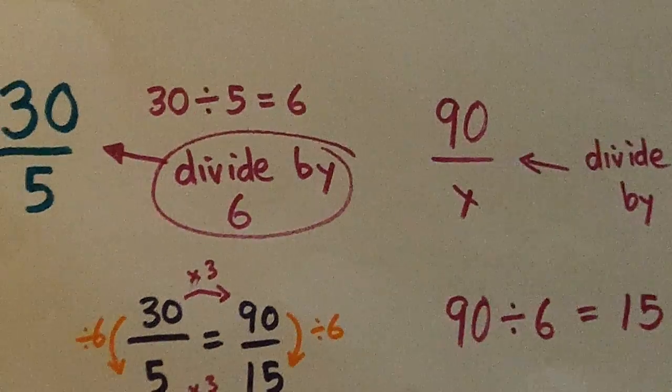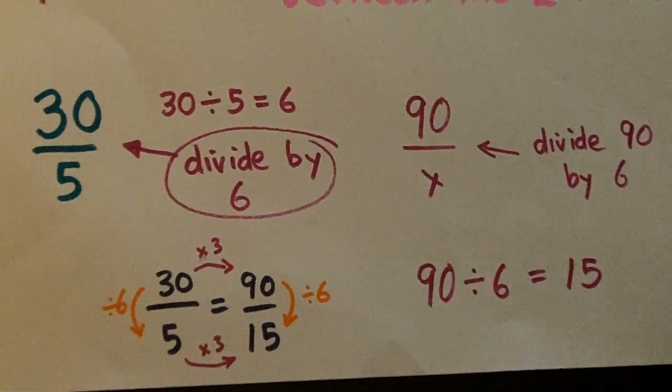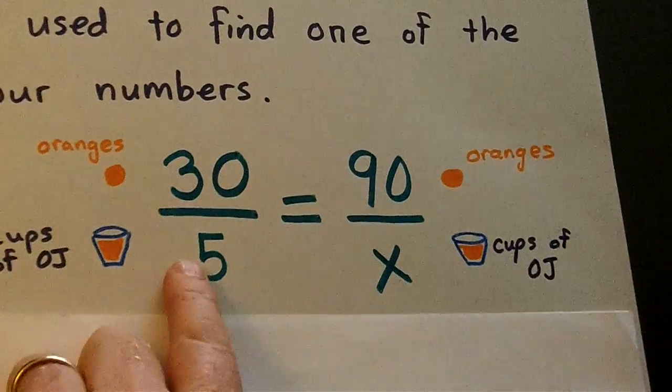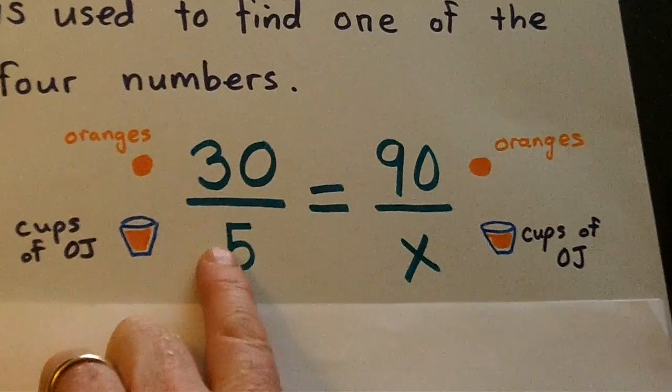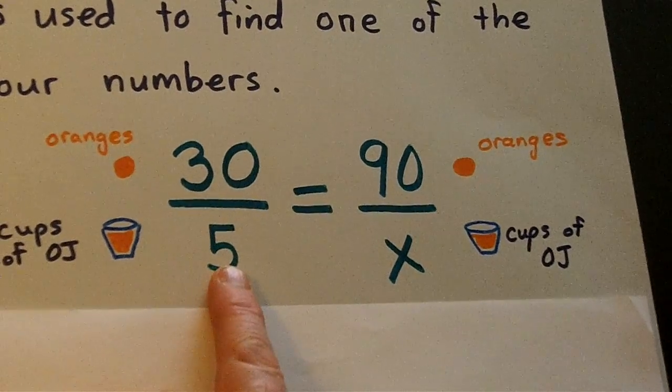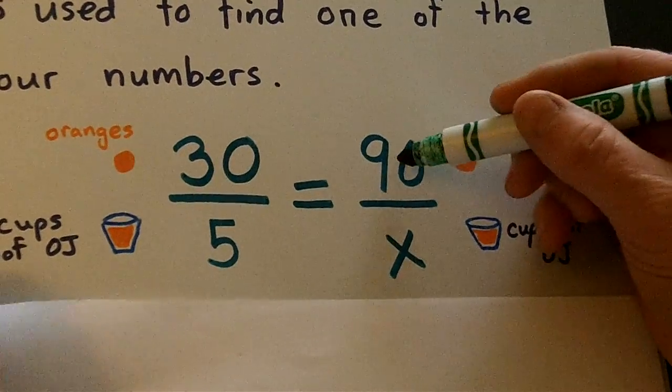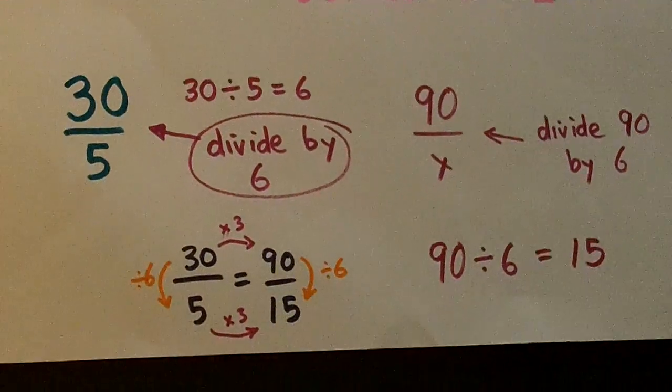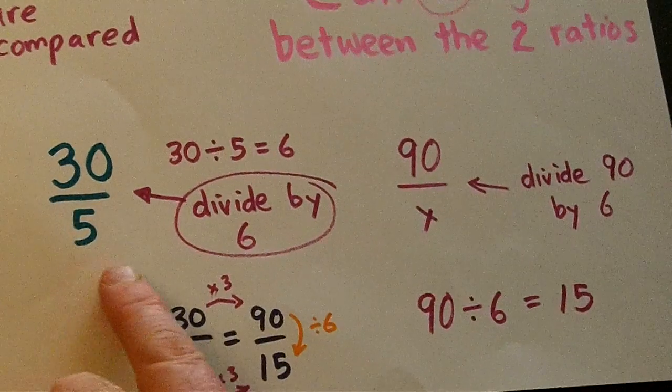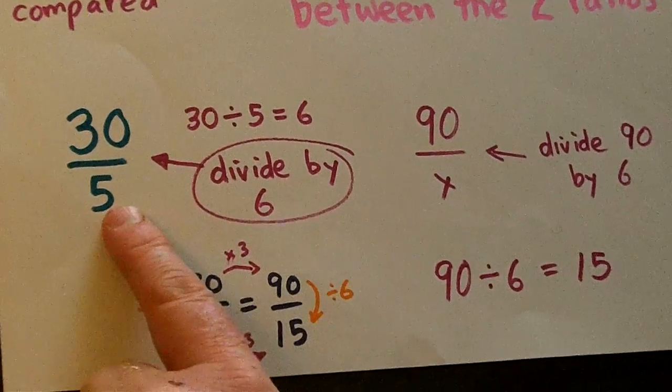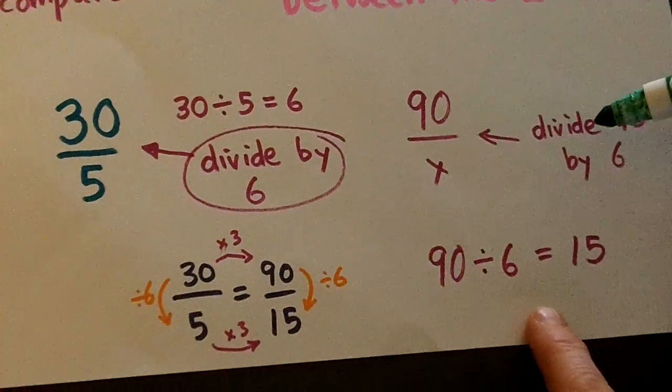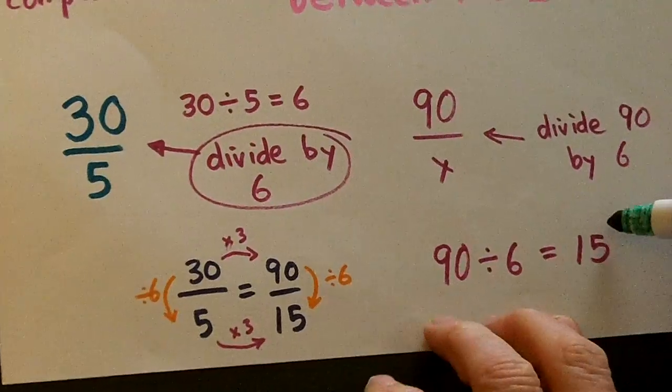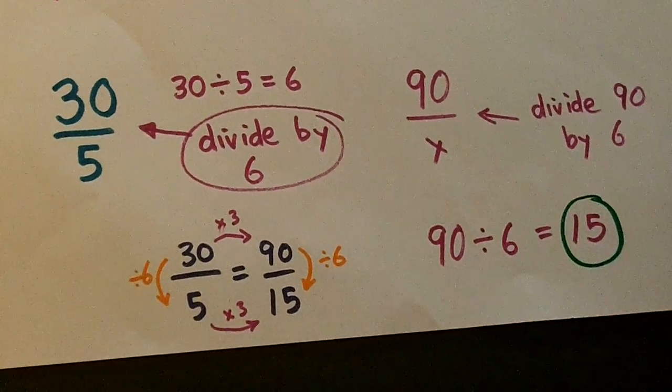Now, what we can say is, let's go back up here. How does 30 become five? Well, we divide by six. So, for every six oranges, we get five cups. So, then we just divide 90 by six. So, now we go down to the computation here. 30 divided by six is five. And then we do the same thing on the other side. 90 divided by six is 15.